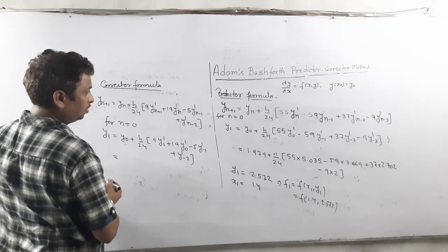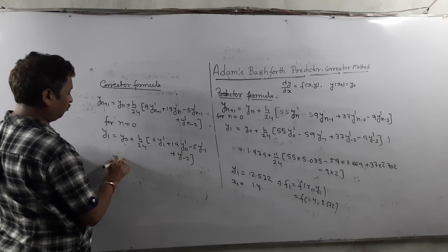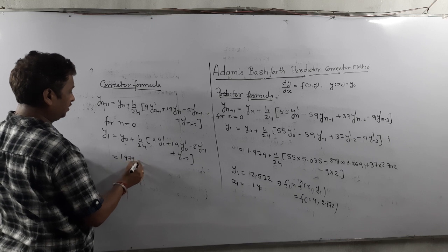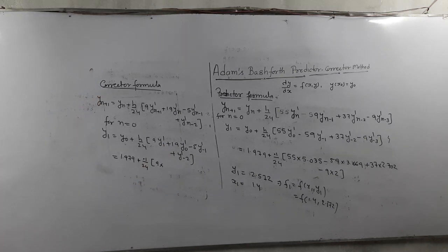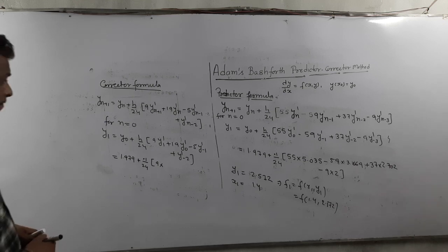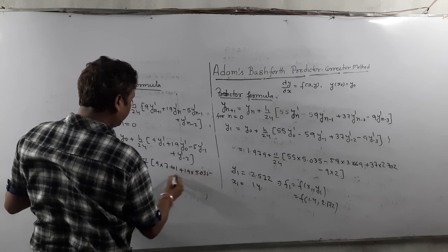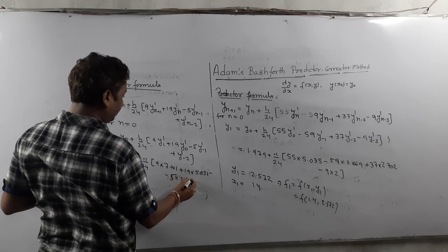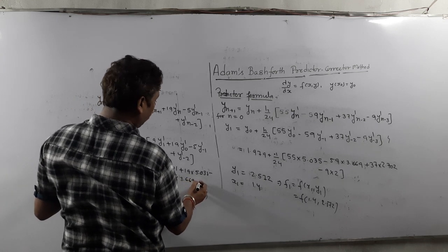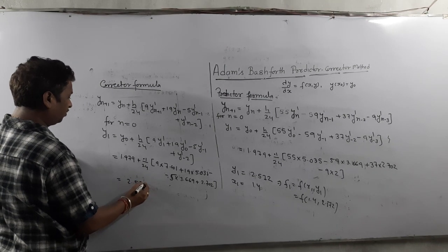Applying the corrector formula with y0 = 1.979, h = 0.1: y1 = 1.979 + (0.1/24) × [9·f1 + 19·f0 − 5·f(−1) + f(−2)], where f1 = 7.001, f0 = 5.035, f(−1) = 3.669, f(−2) = 2.702. Simplifying gives the corrected answer y1 = 2.574.